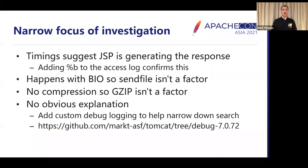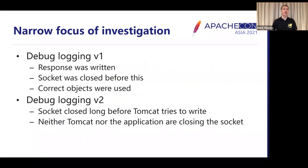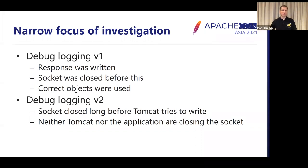So we reached the stage where we really needed to add custom debug logging to narrow down the search. The source code is in a branch on my Tomcat fork on GitHub, and you're welcome to see each of the patches there. Version one of the debug logging was fairly simple — it confirmed the response was written, confirmed the socket was closed before the response was written (which is why it's never being seen), and confirmed that the correct objects were being used, so we weren't doing something silly like writing the response to an output stream associated with a previous response.